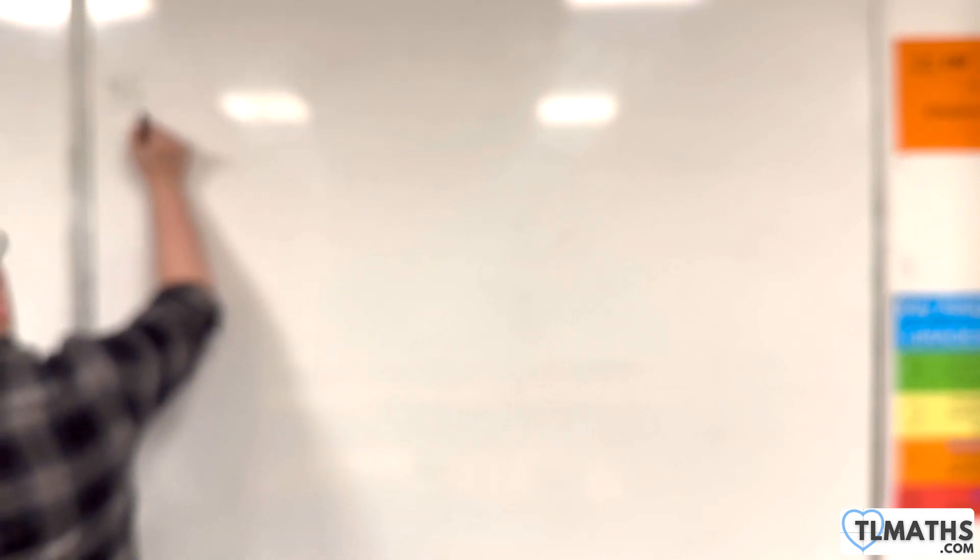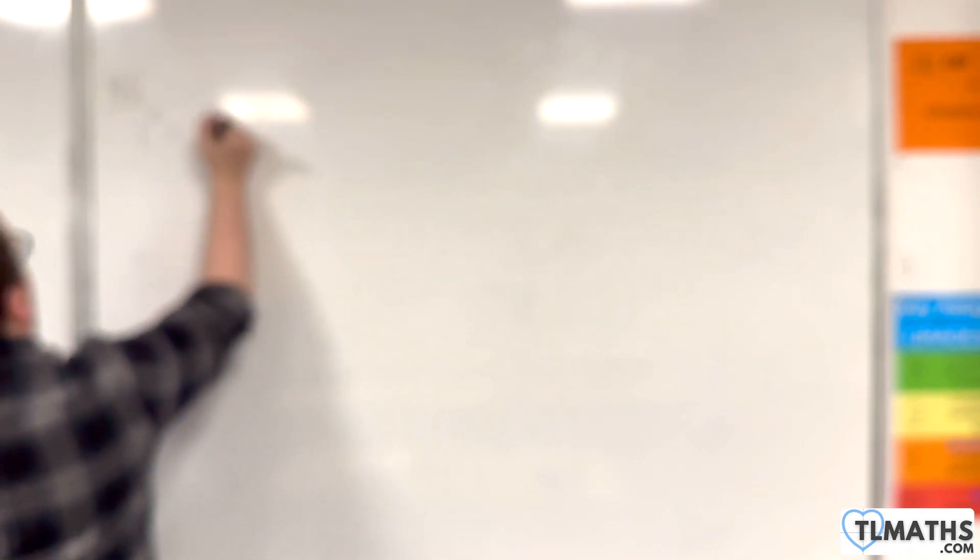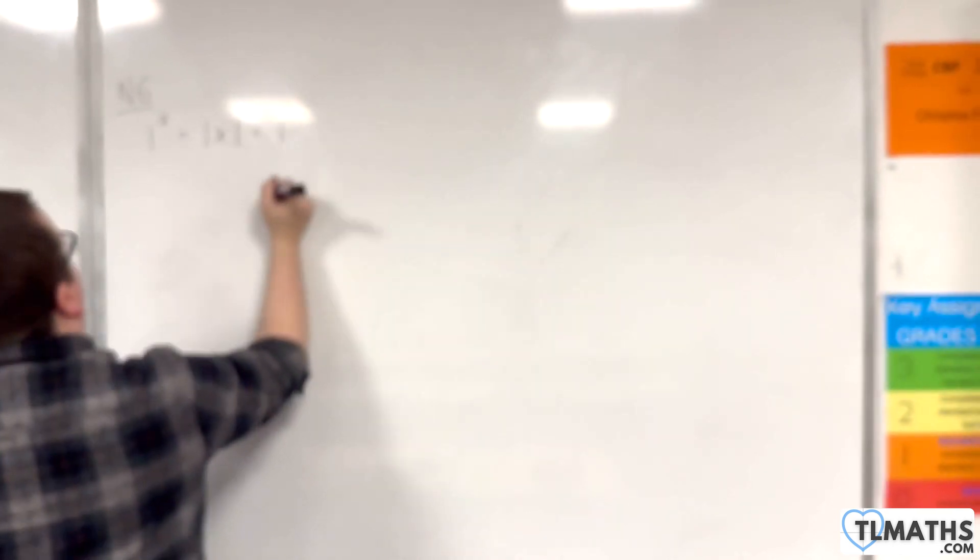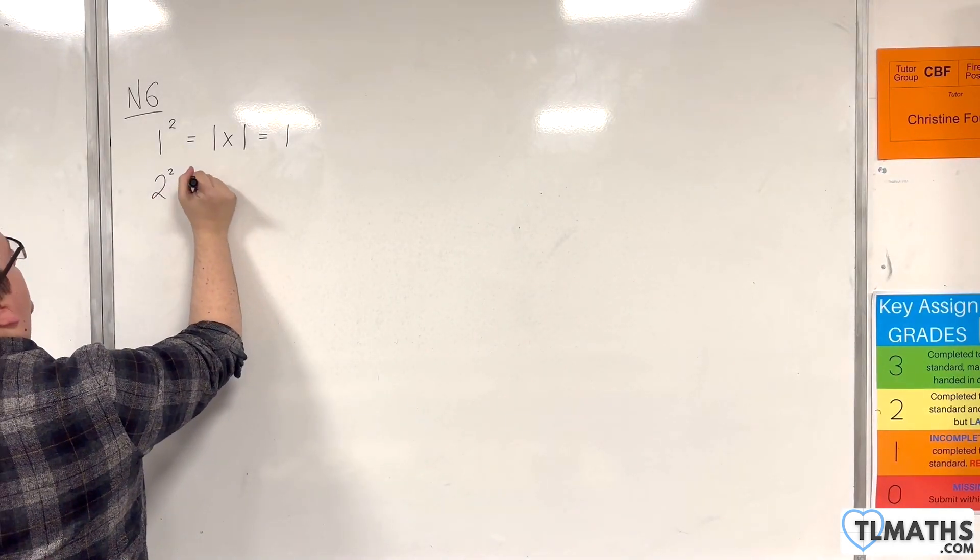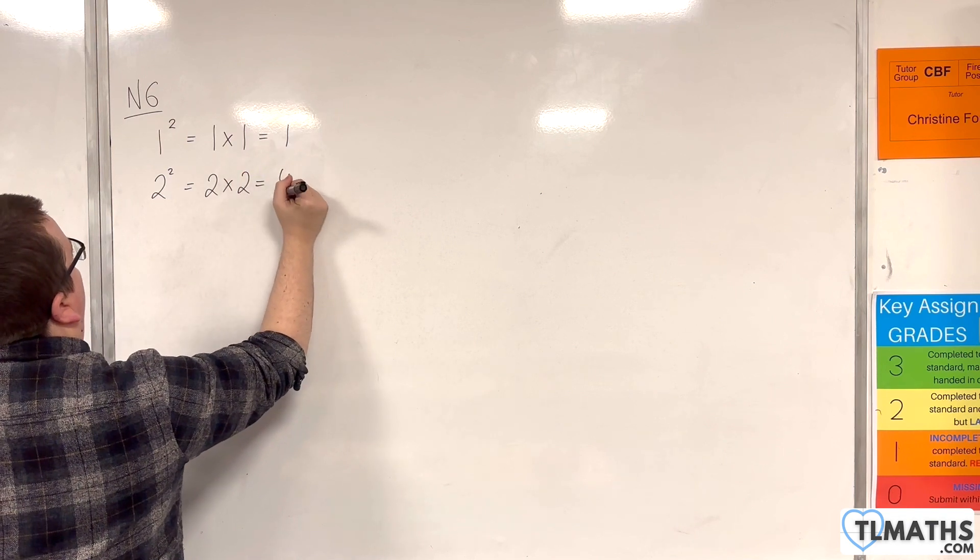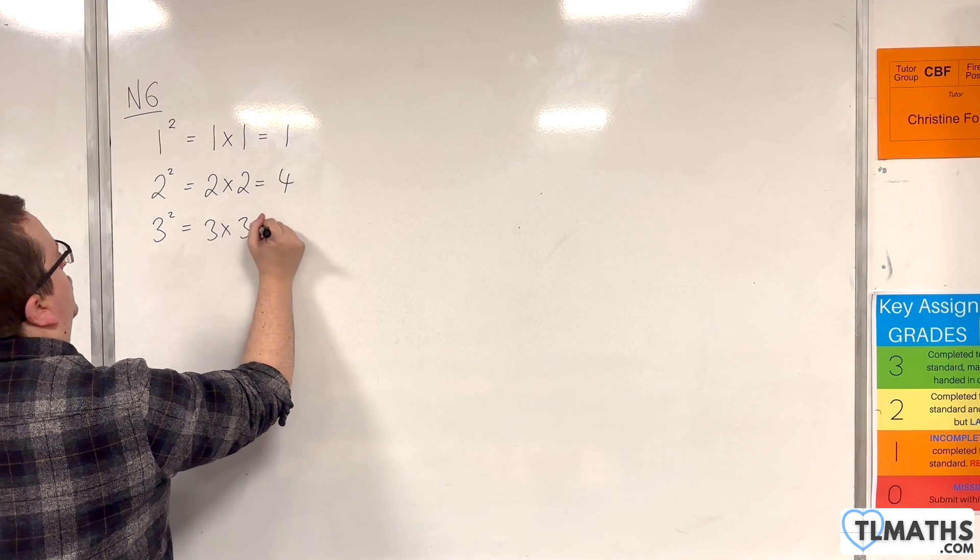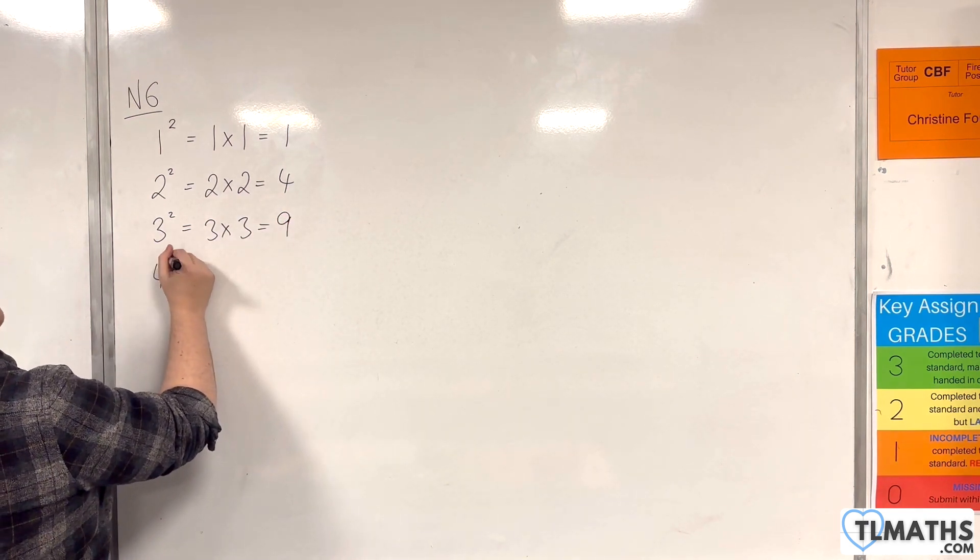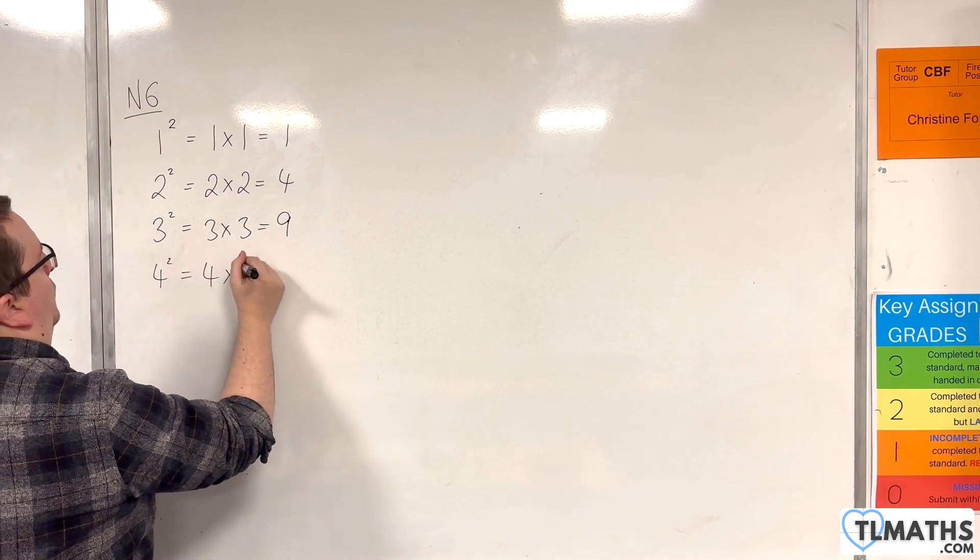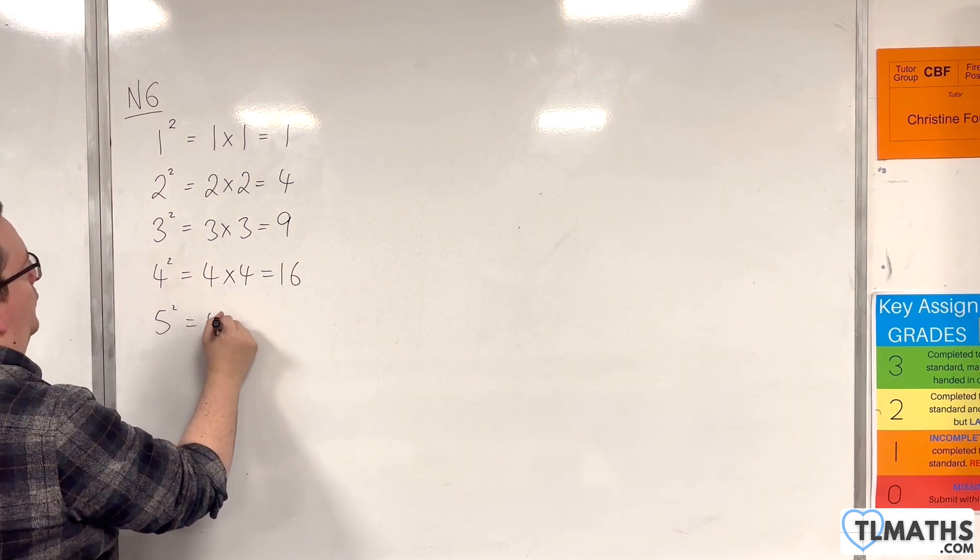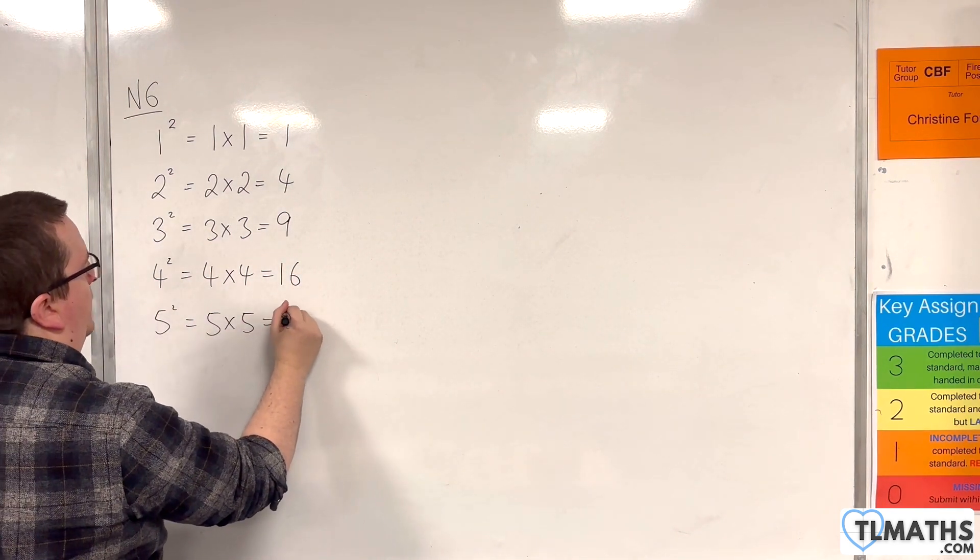1 squared is 1 times 1, and so that is just 1. 2 squared is 2 times 2, which is 4. 3 squared is 3 times 3, which is 9. 4 squared is 4 times 4, which is 16. 5 squared is 5 times 5, which is 25.